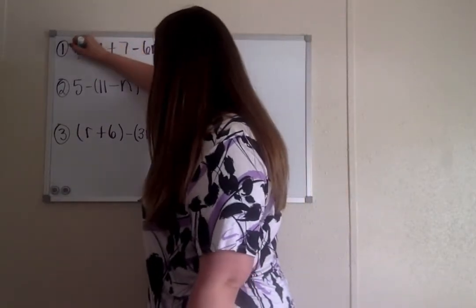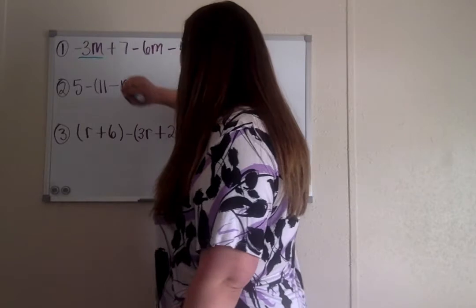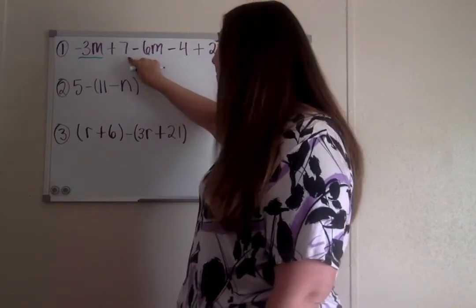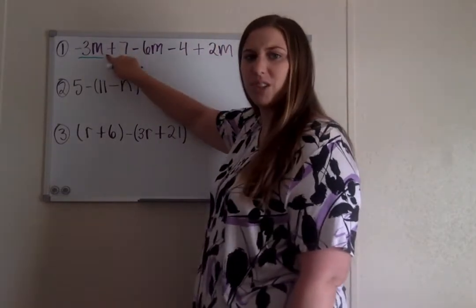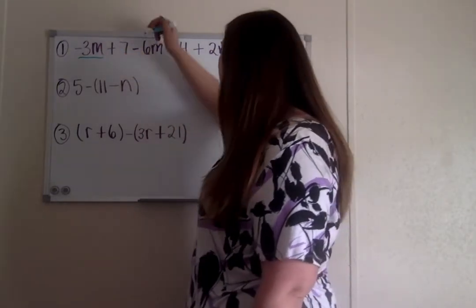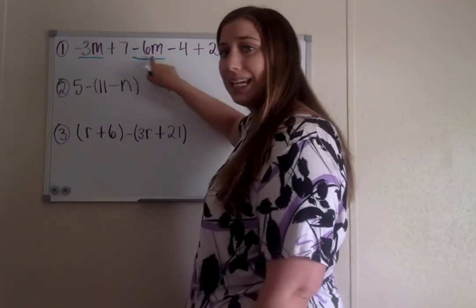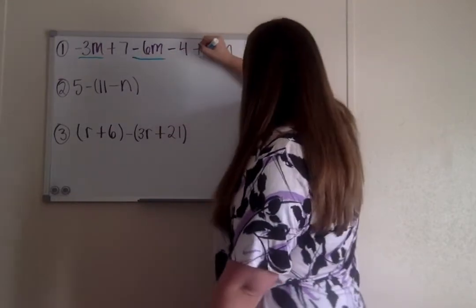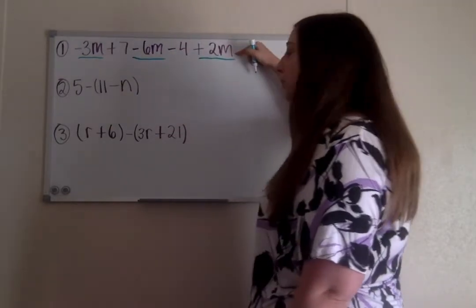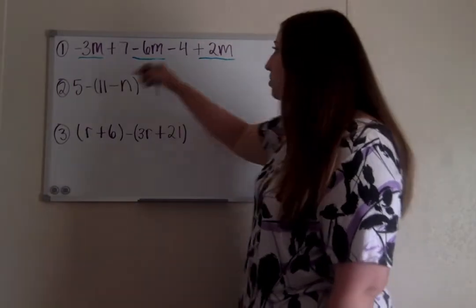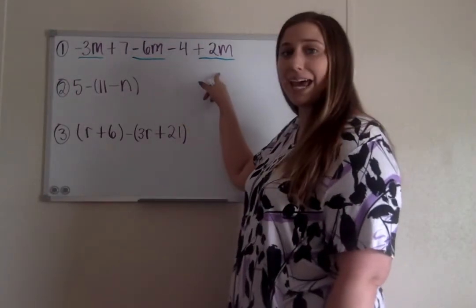So I see I have a negative 3m here, then a plus 7. That 7 does not have an m, so that doesn't look the same to me. But here I do have another m, specifically a negative 6m, and then back here we have another m, a plus 2m. So see, each of these terms have an m, so those are my like terms that I'm able to combine.